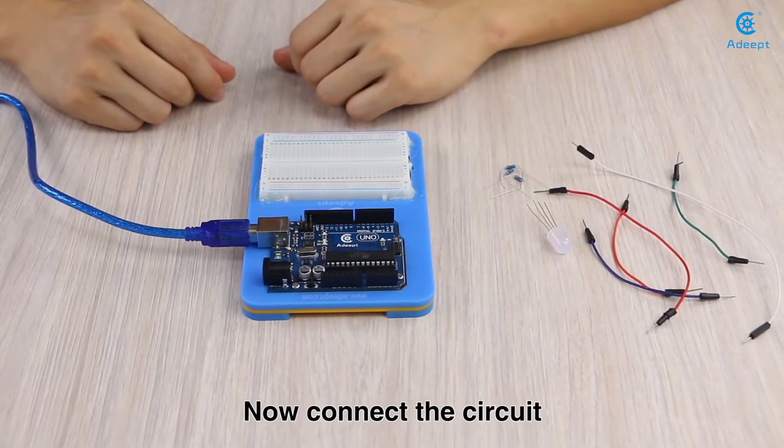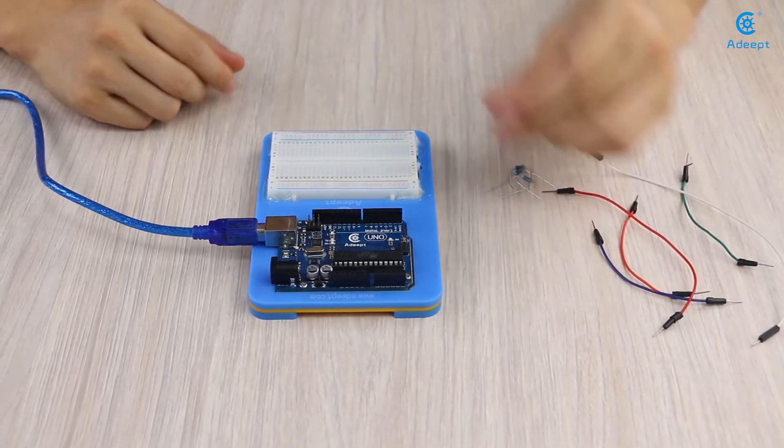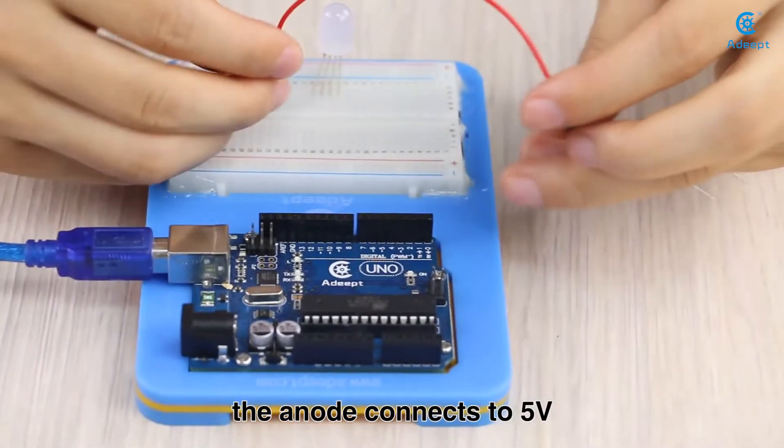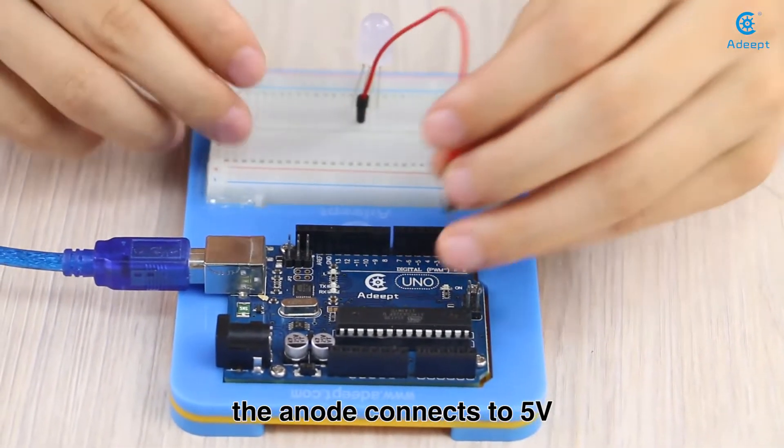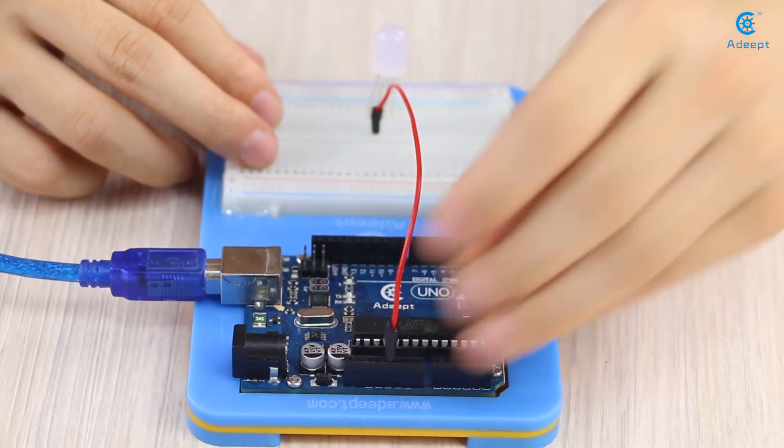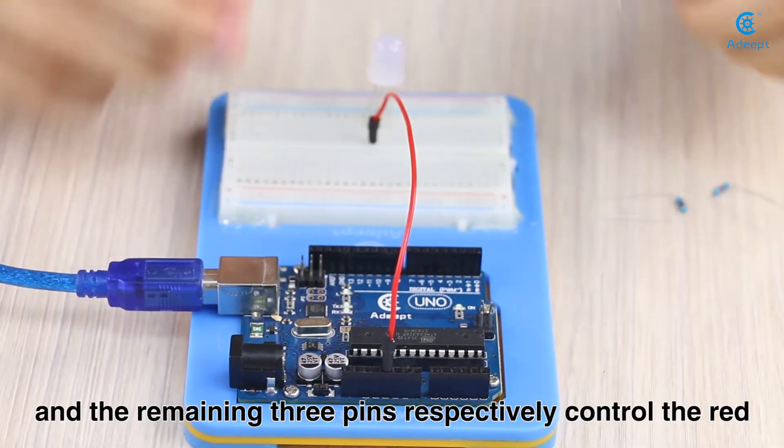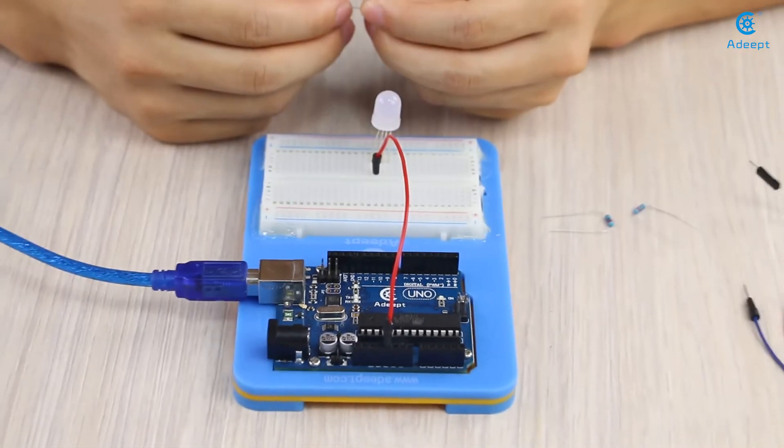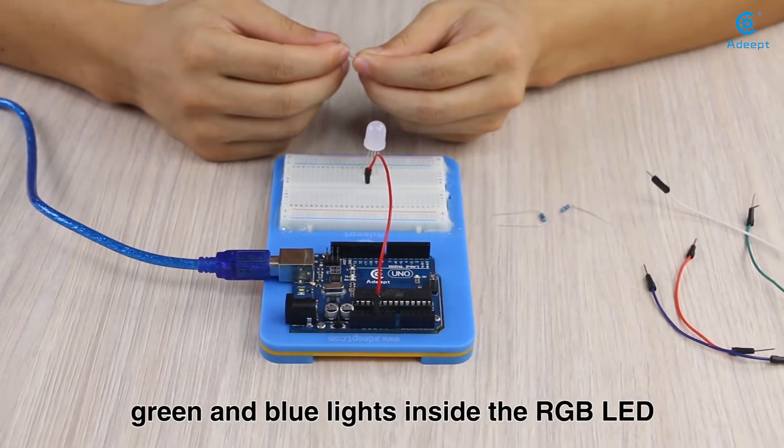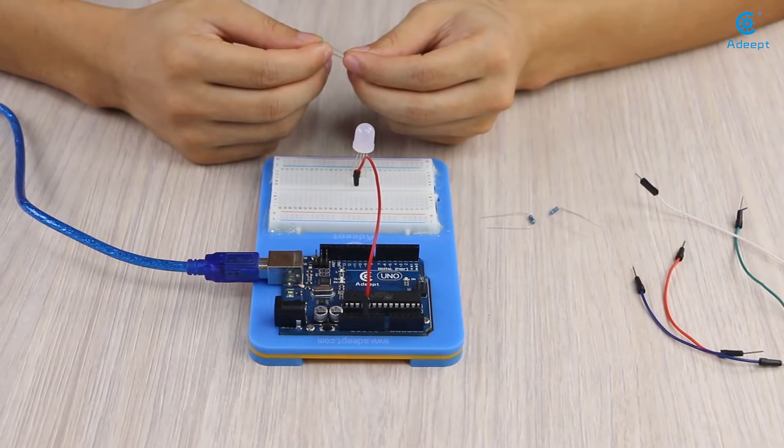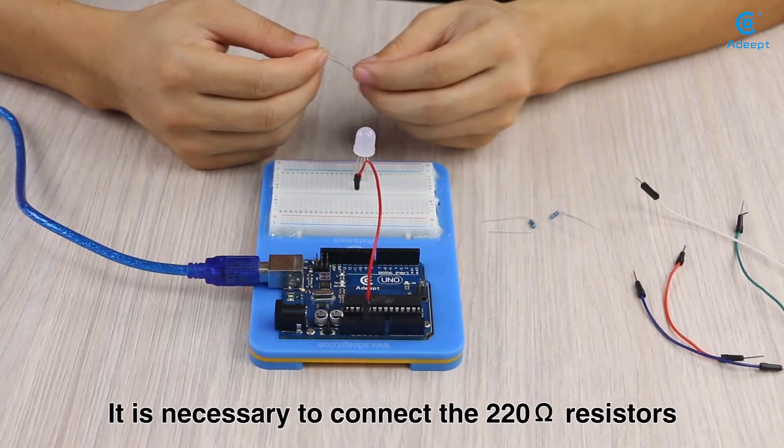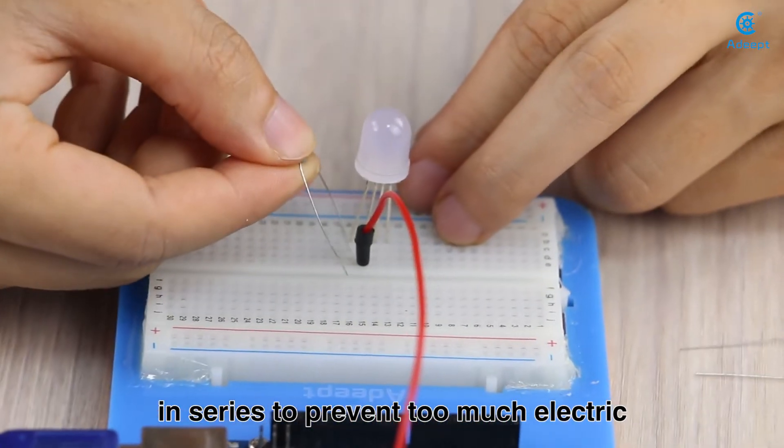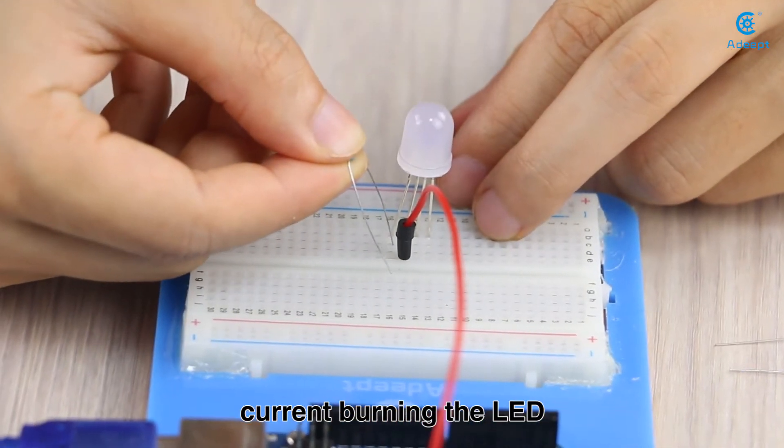Now connect the circuit. This is RGB LED. The anode connects to 5 volts, and the remaining 3 pins respectively control the red, green, and blue lights inside the RGB LED. It is necessary to connect the 220 ohm resistors in series to prevent too much electric current burning the LED.